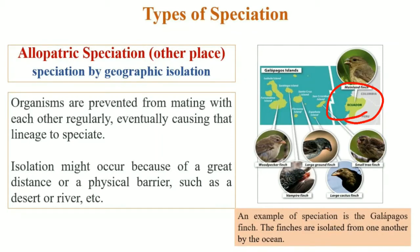Since there is no contact with the main population, these individuals explore new habitats and adapt to them, eventually evolving into different species. With geographical isolation and no mating with the original population, they evolve into new species.